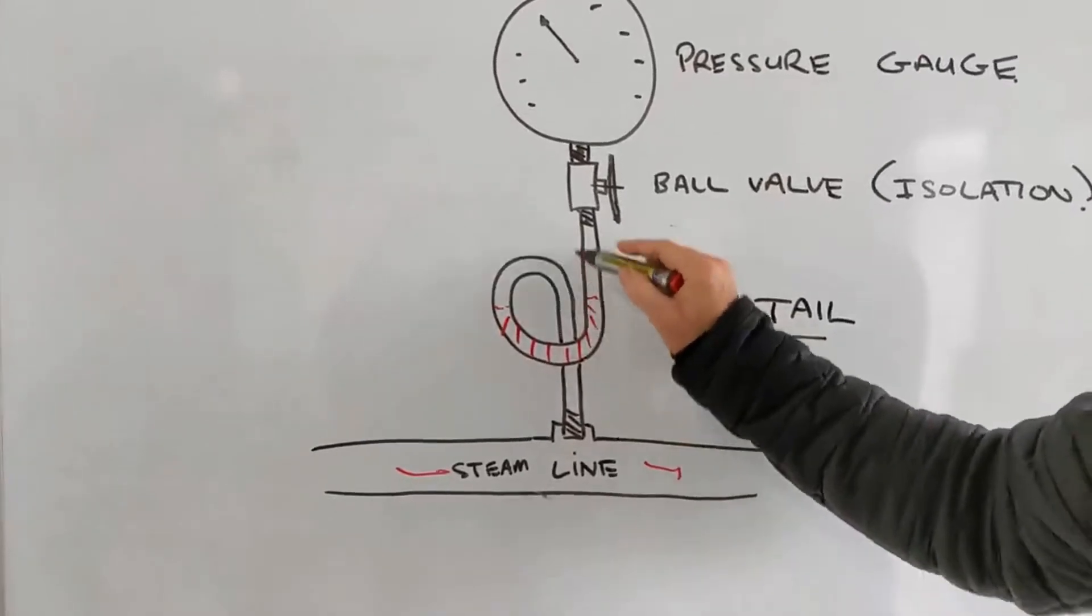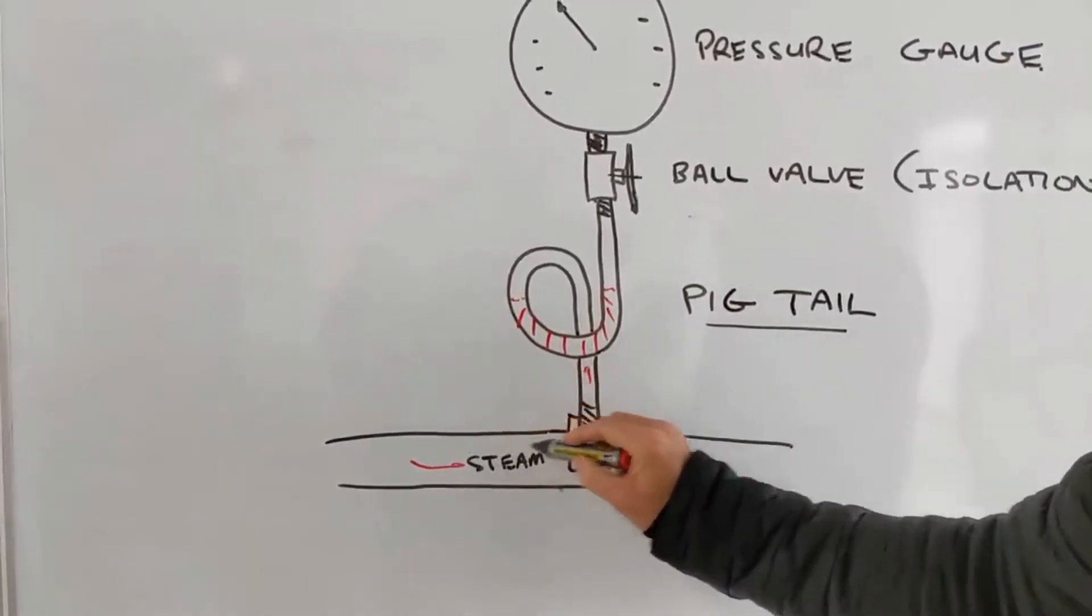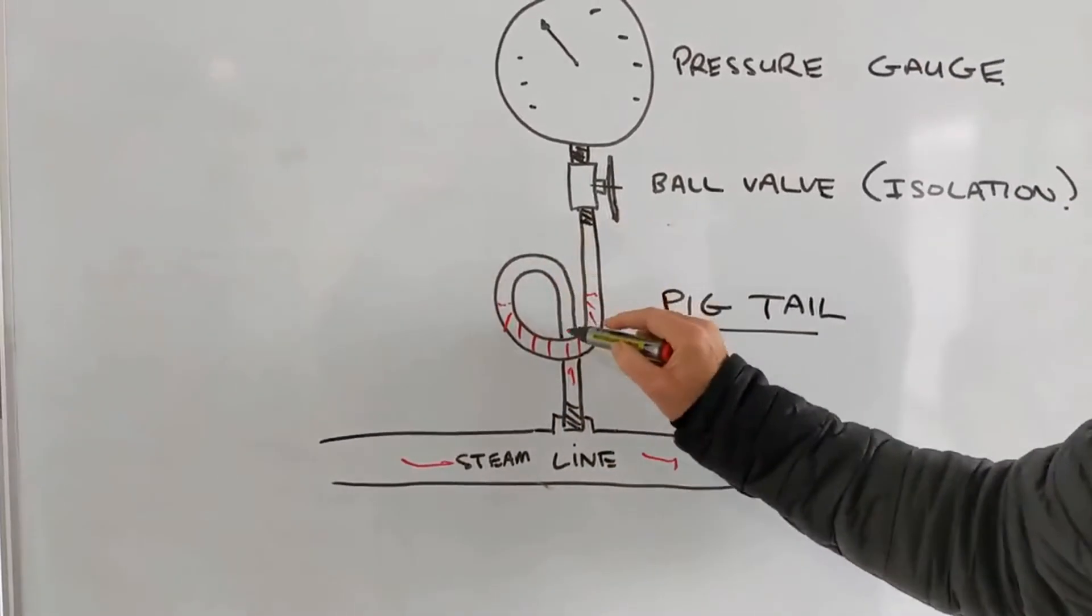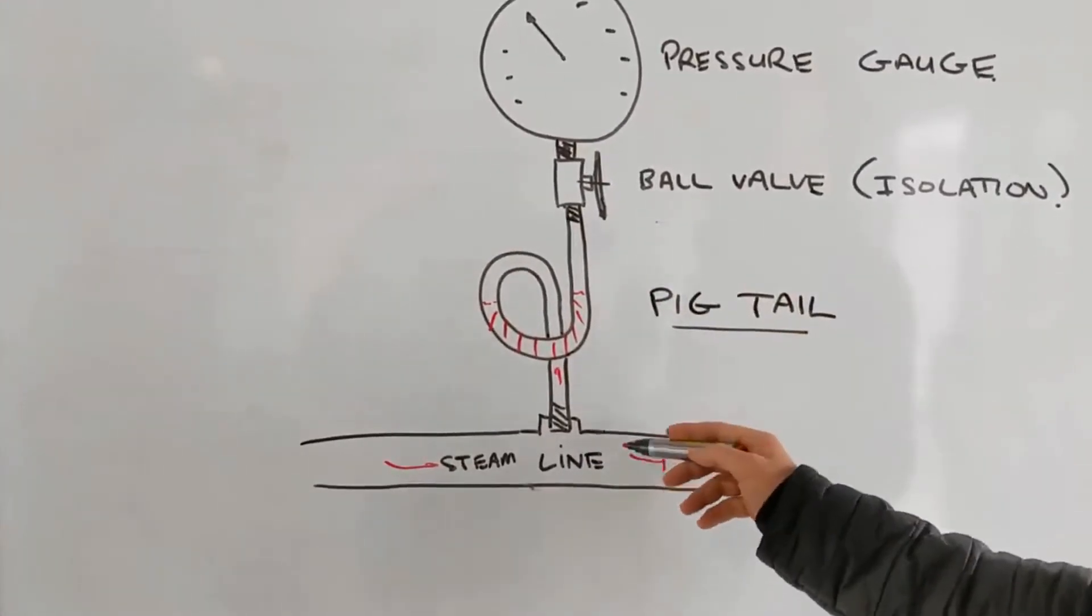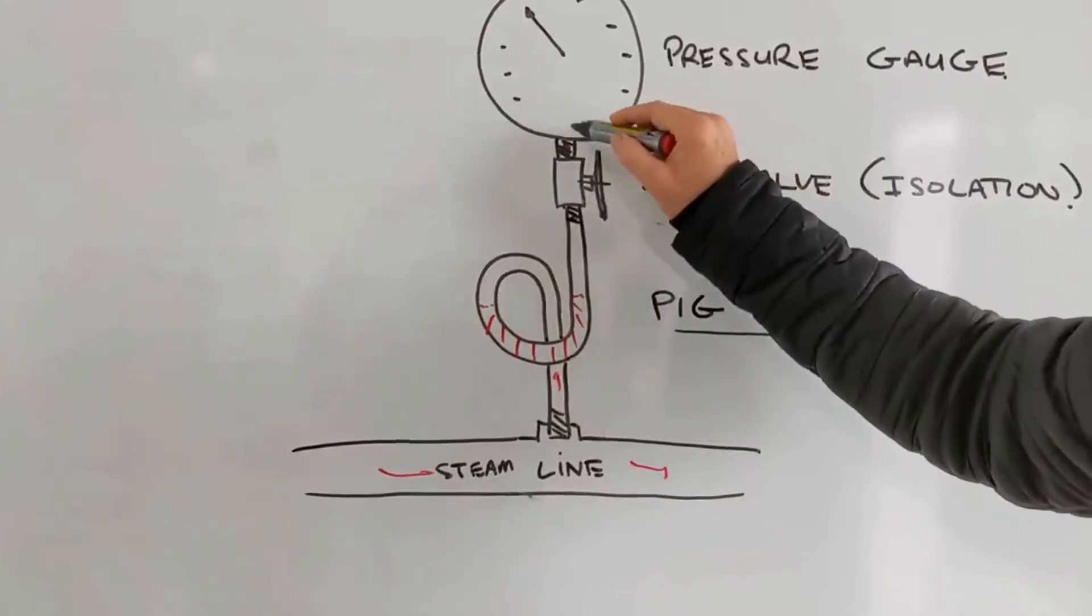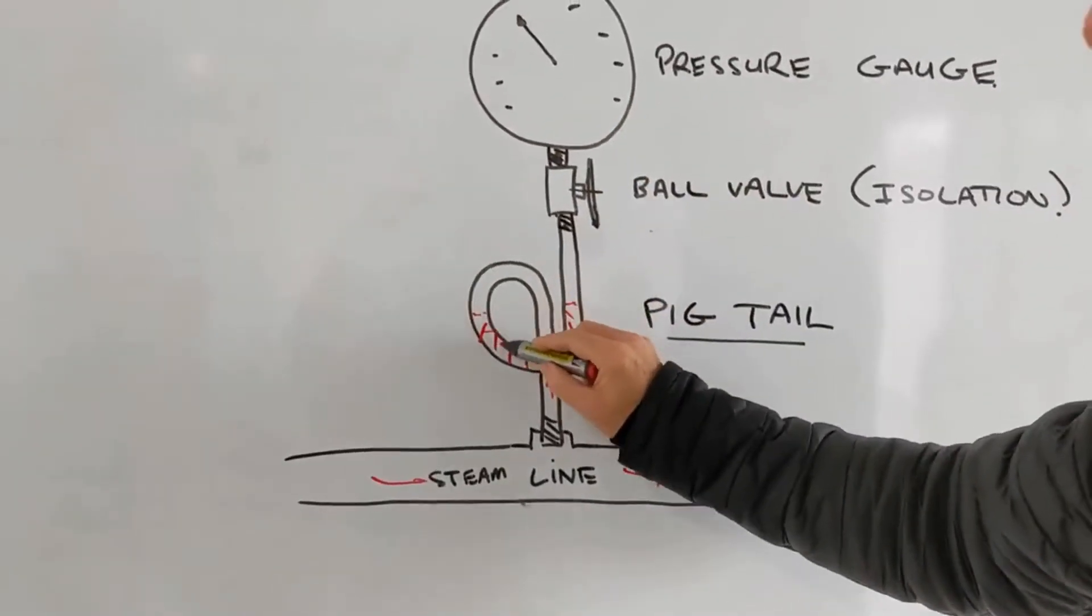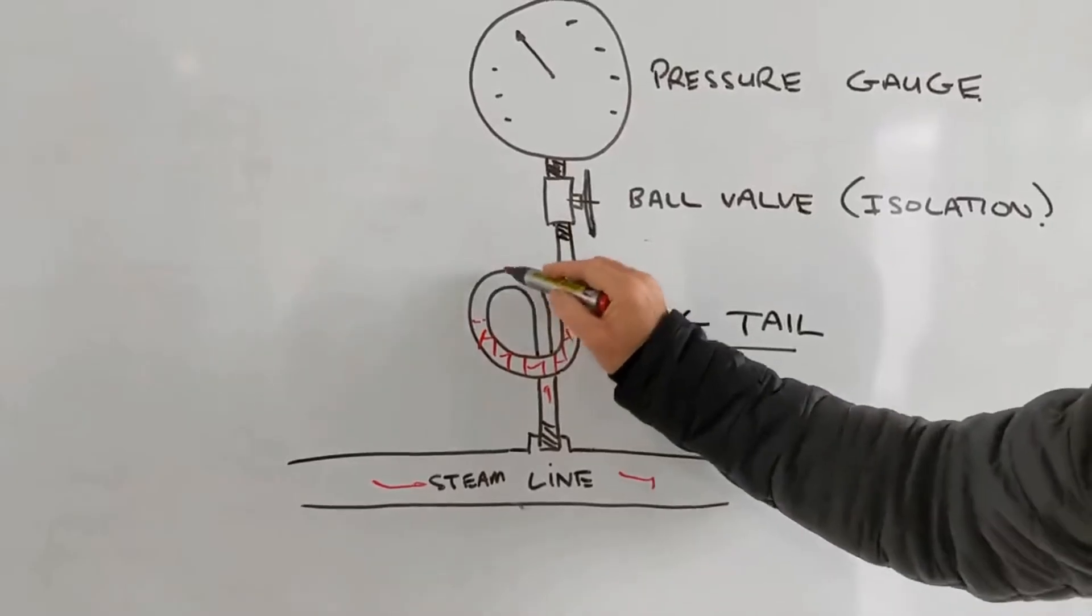Now pressure can get through here still, so you'll still get an accurate line pressure, but what you won't get is the full temperature of that steam. So if it's 10 bar, maybe 180 degrees, you won't get 180 degrees on your gauge here because it's protected by this condensate sitting in here. Pressure will still go through and you can still read the pressure on your gauge.